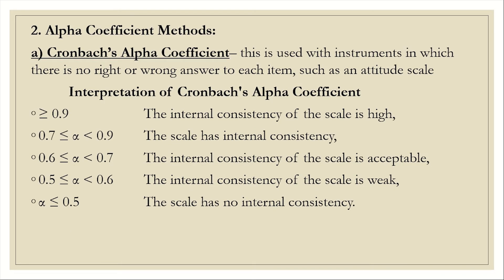We are going to continue with alpha coefficient methods. We have two alpha coefficient methods. The first one, which is very common, is called Cronbach alpha coefficient. This is used with instruments in which there is no right or wrong answer to each item. It is most applicable when we have a Likert kind of test. Likert scales measure attitude, so when we have questions in Likert-type scales, the best method to determine reliability is Cronbach alpha coefficient.